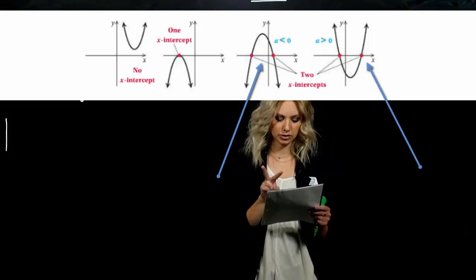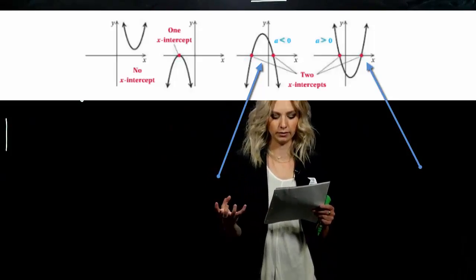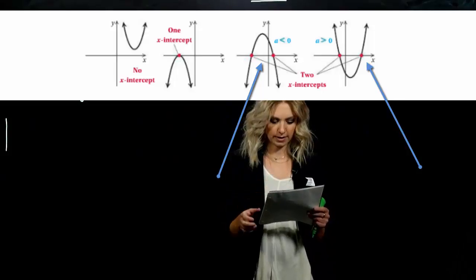Or the last two, we can have two separate x-intercepts. So if we find two real values, we will graph and it will look like that.